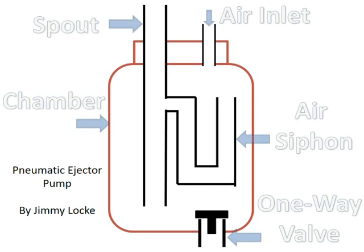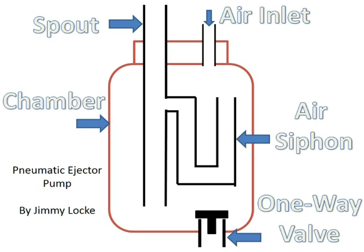This ejector pump is comprised of five parts: an enclosed chamber that can be pressurized, a one-way valve to let liquid in, a hole to let air in, a spout for where the liquid will be purged out, and an air siphon, which allows the pump to refill.